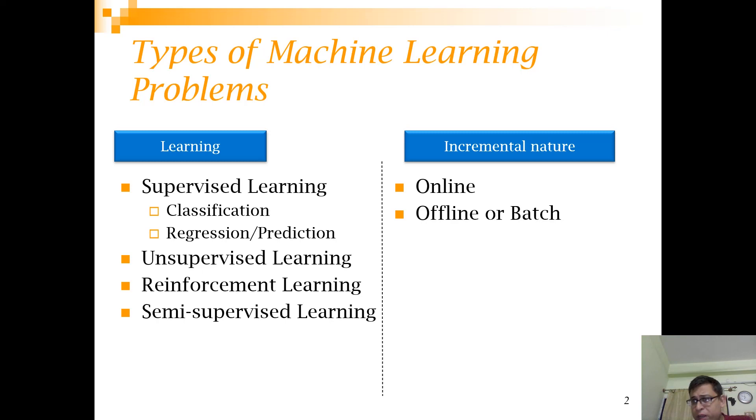Another classification, which is not a very common way, is how the model learns. There can be two approaches. One is that you train the model and then you deploy it. This is called an offline or batch model. The model is trained offline, not interacting with the real-time environment. The online models have a component where the model can be updated while it is in production.